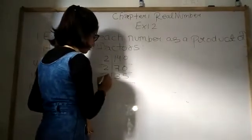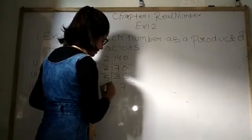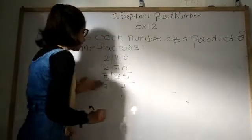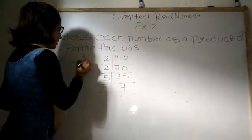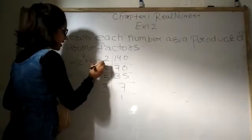Now by which number? Of course by 5. 5 times 7 is 35, and 7 times 1 is 7. So what is our product? 2 square into 5 into 7. Done.